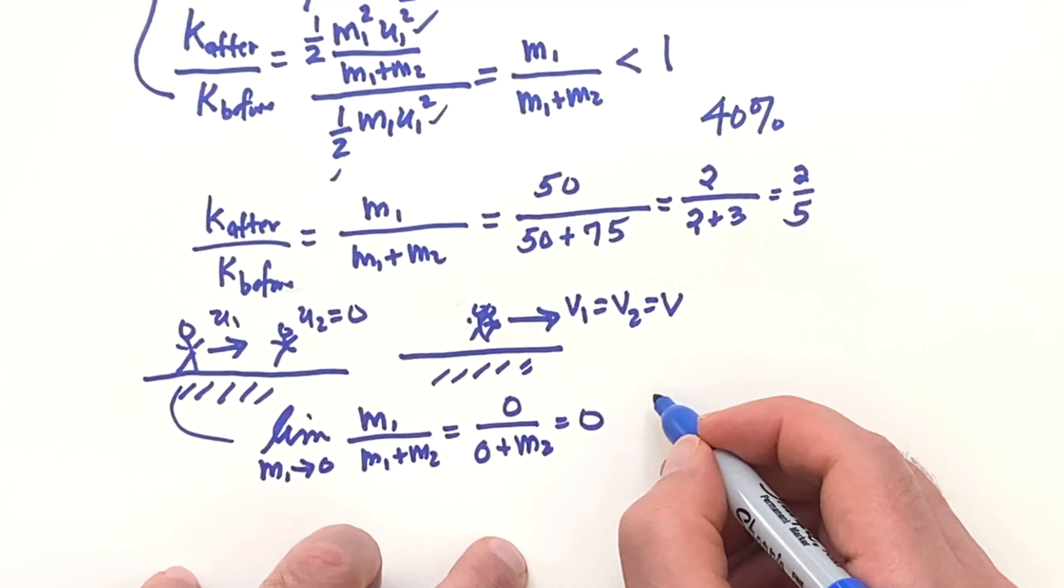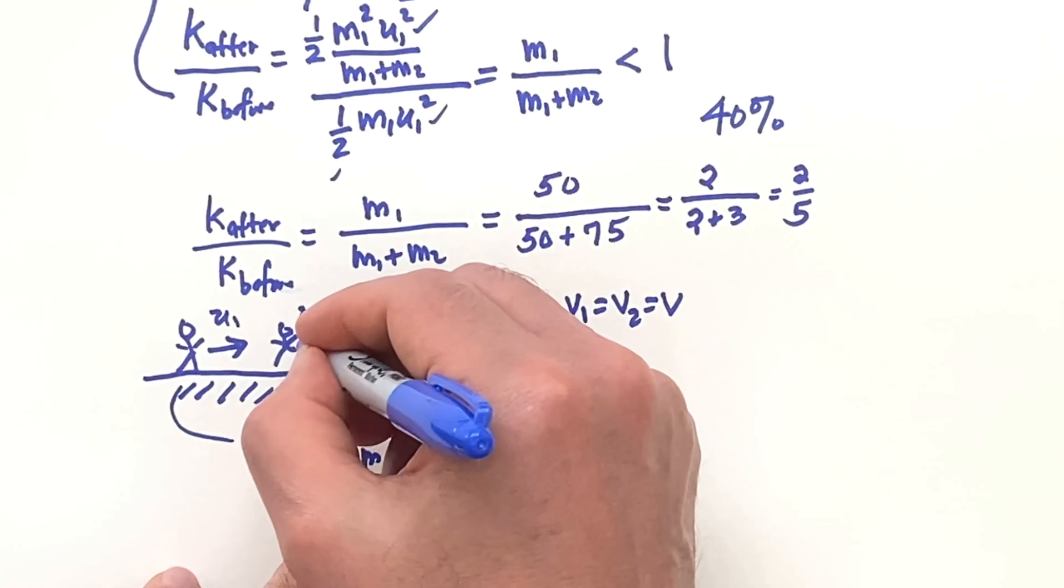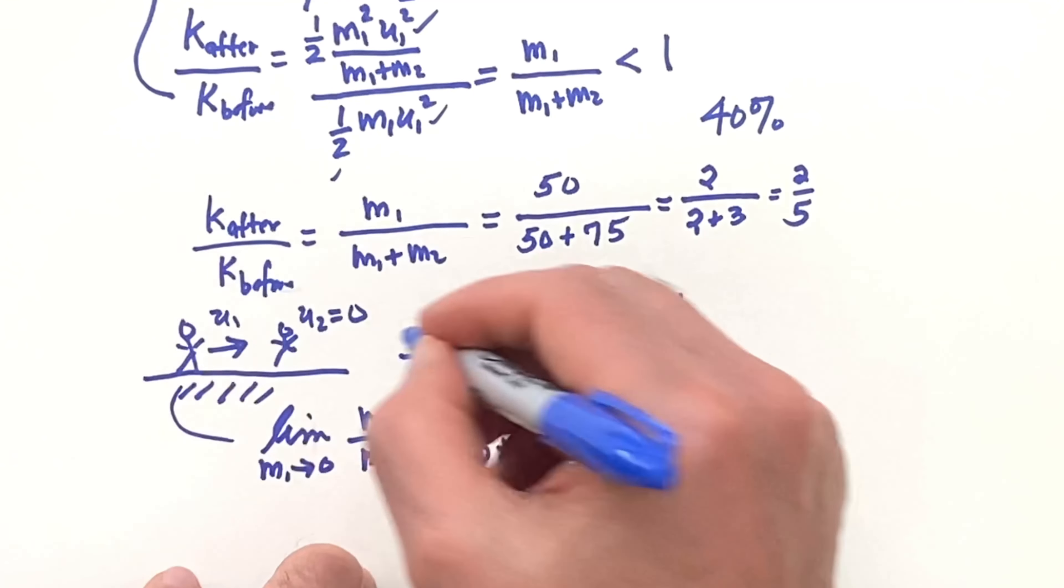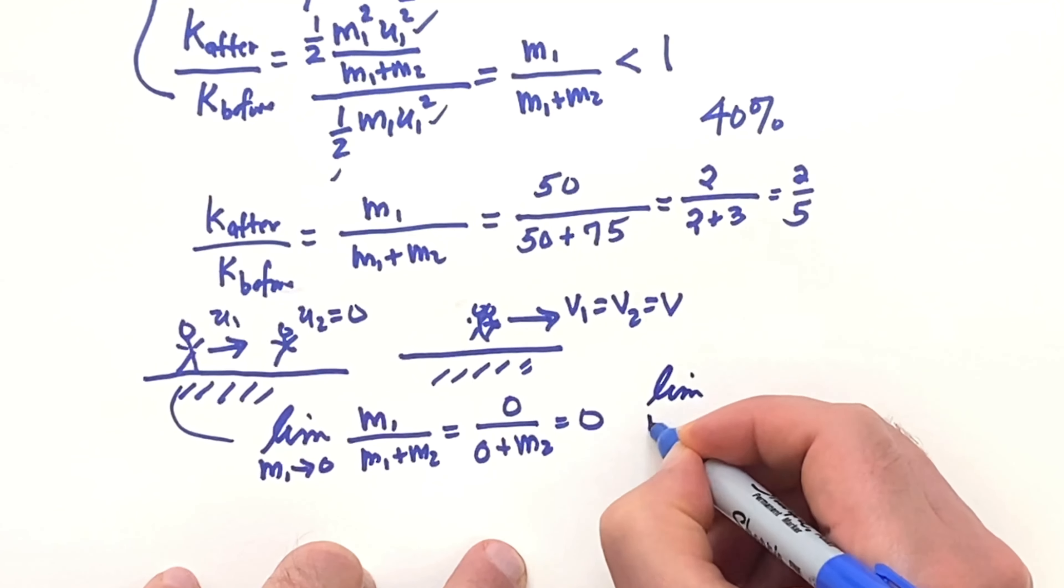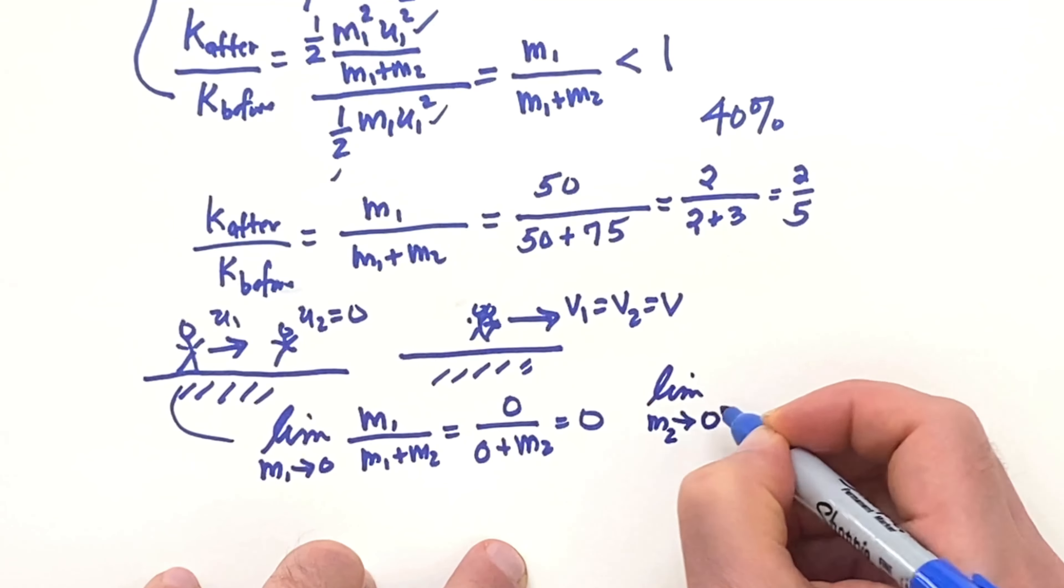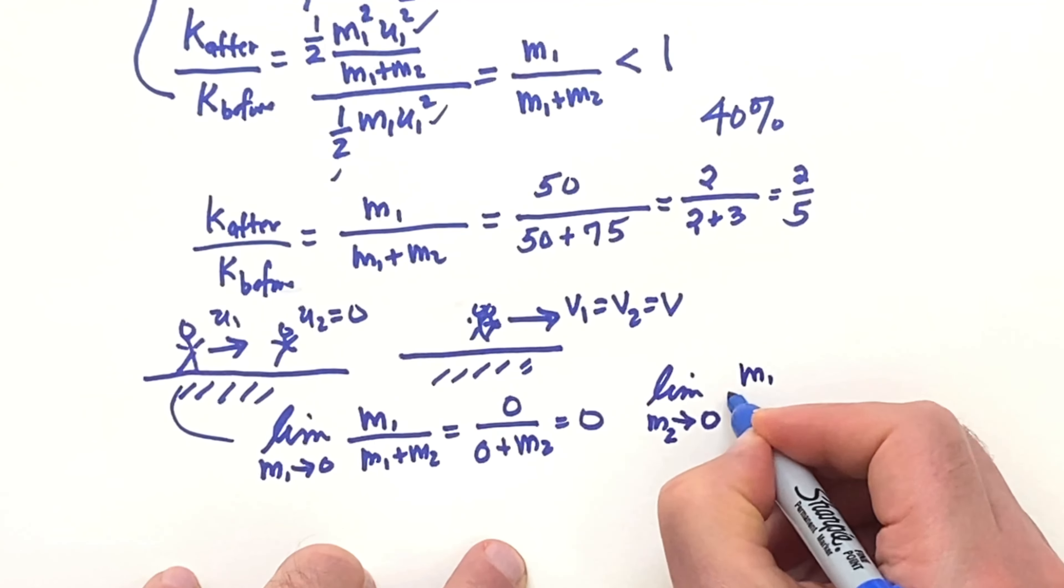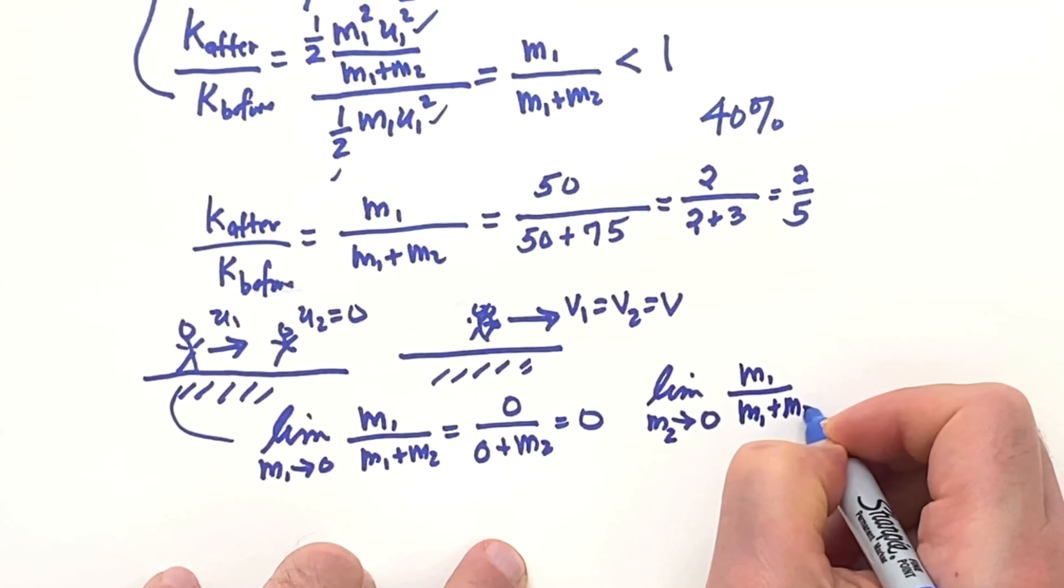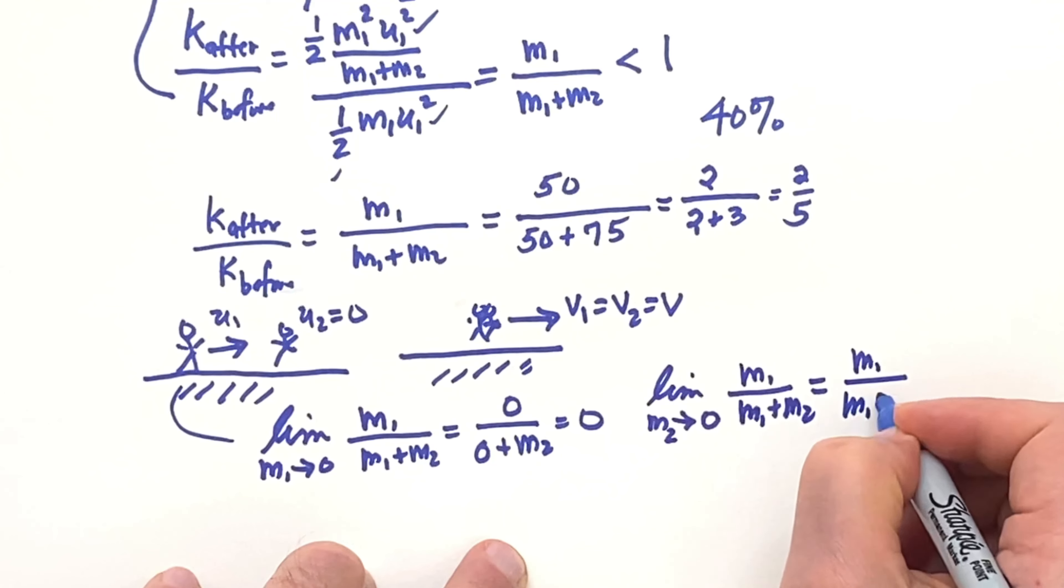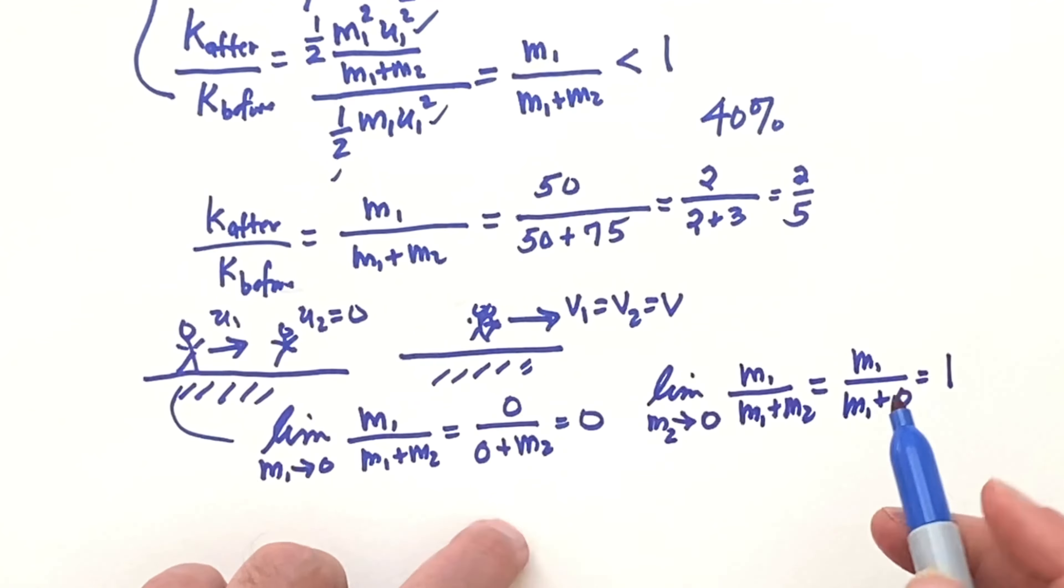So suppose we have the situation where the second person is very, very light compared to the first person. So that would mean the limit as M2 goes to 0. Or you can think of the limit as M1 that goes to infinity. Either way is going to work. M1 over M1 plus M2, that's going to be M1 over M1 plus 0 which is 1. In other words, if the second person here is very, very light, the first person will just grab that and they'll go on with the speed of the first person.